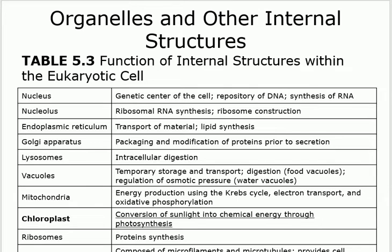Only a special type of eukaryote has chloroplast — specifically plants. They use it for photosynthesis: during sunlight they take that energy and produce nutrients, converting light energy into chemical energy like starch. For example, corn contains starch — that starch is made from sunlight. So in photosynthesis, you use light to synthesize nutrients.